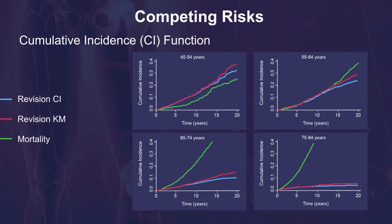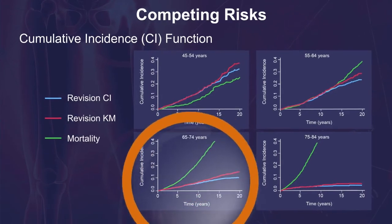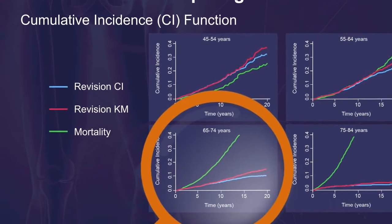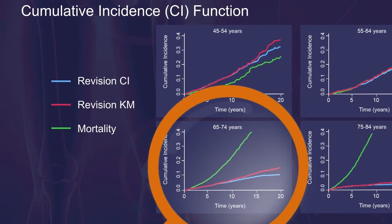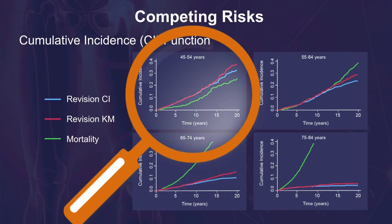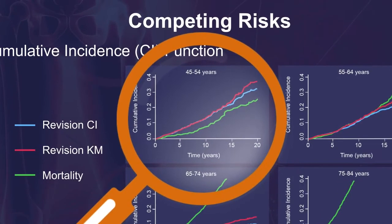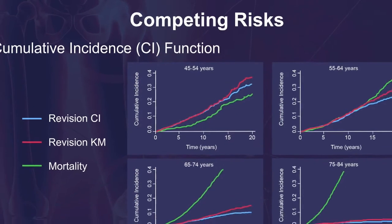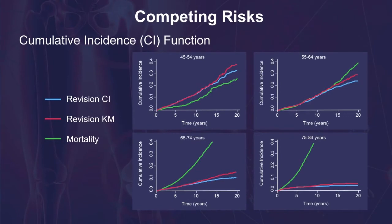Here is an example of a study examining risk of revision in knee arthroplasty patients. In patients aged 65 to 74 years, the incidence of mortality (the green line) is higher than the incidence of revision. The Kaplan-Meier method overestimates the risk of revision by 11 percent at 10 years and by 45 percent at 20 years. In contrast, in younger patients aged 45 to 54 years, the incidence of mortality is lower than the incidence of revision throughout follow-up. In this case, the Kaplan-Meier and cumulative incidence estimates accounting for competing risk of death do not differ as much, at least with the shorter follow-up.